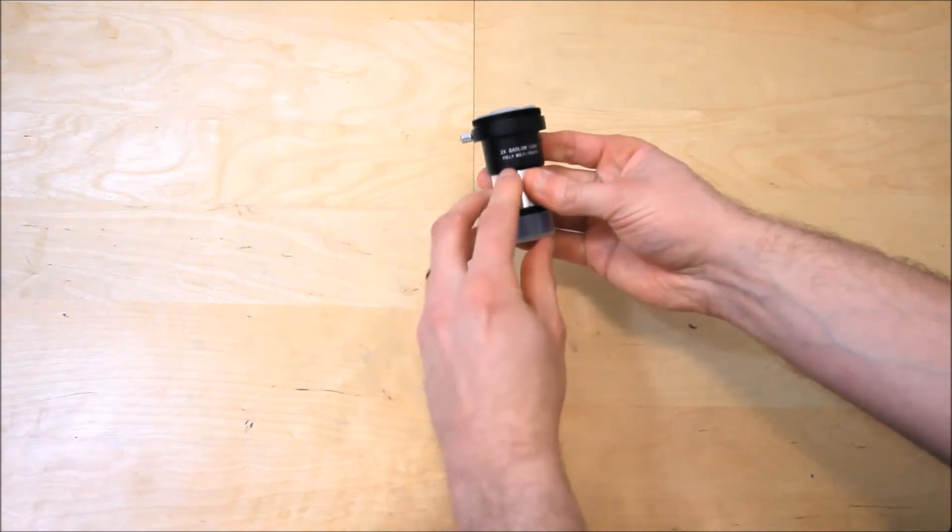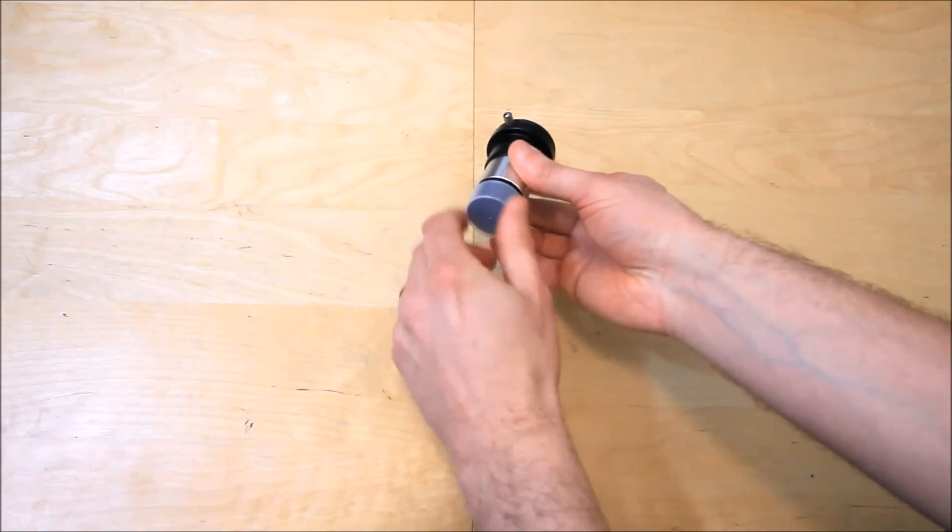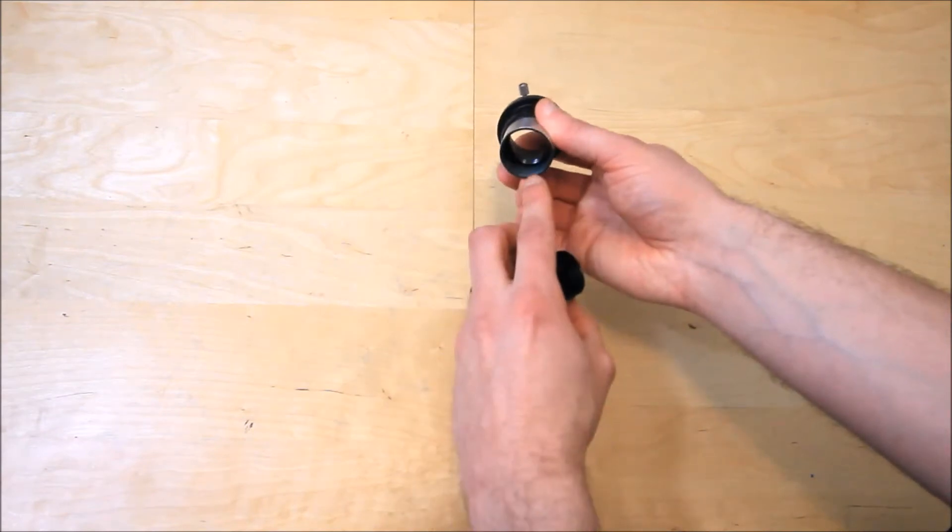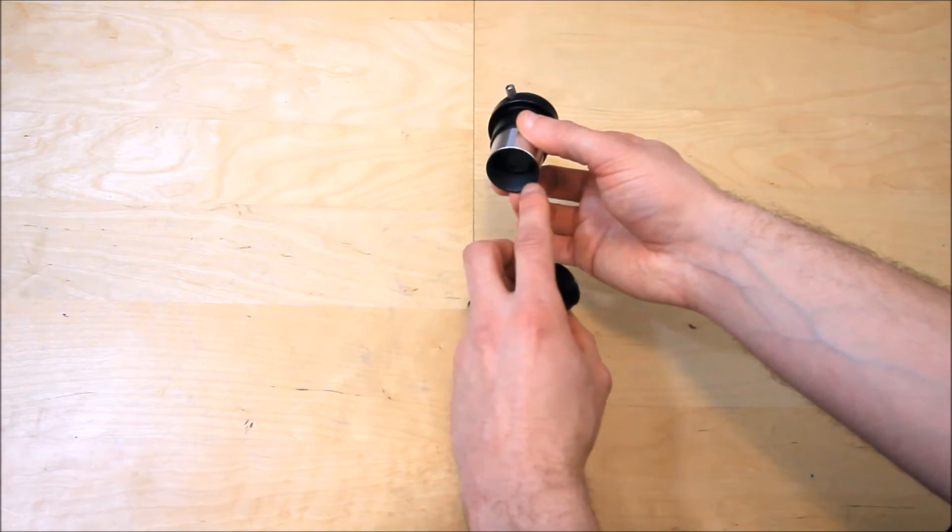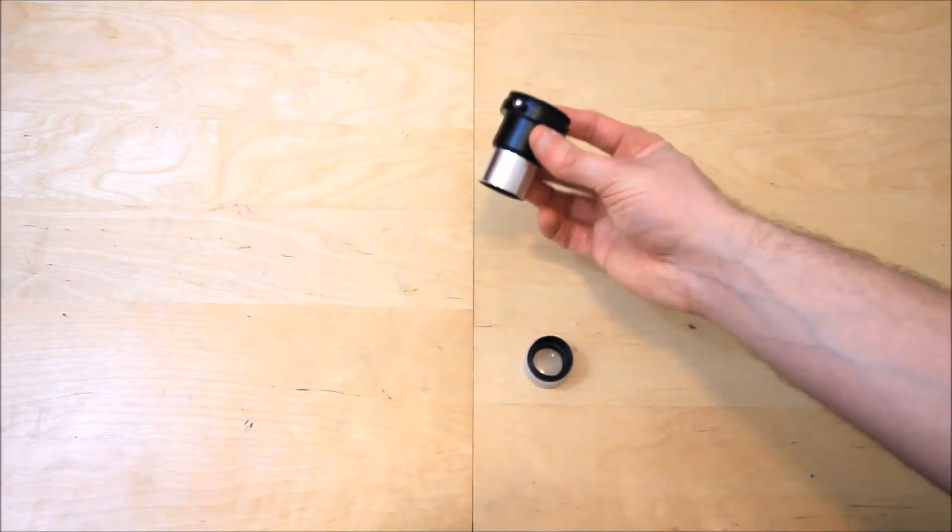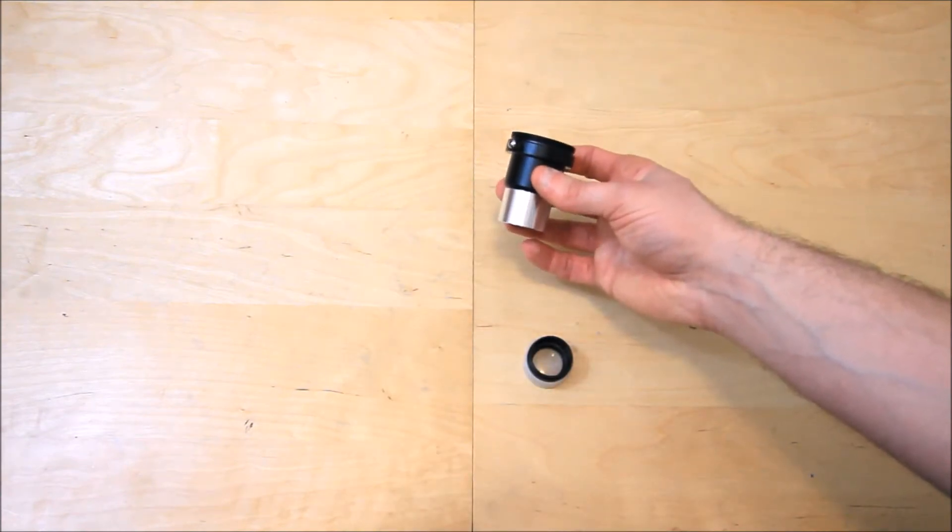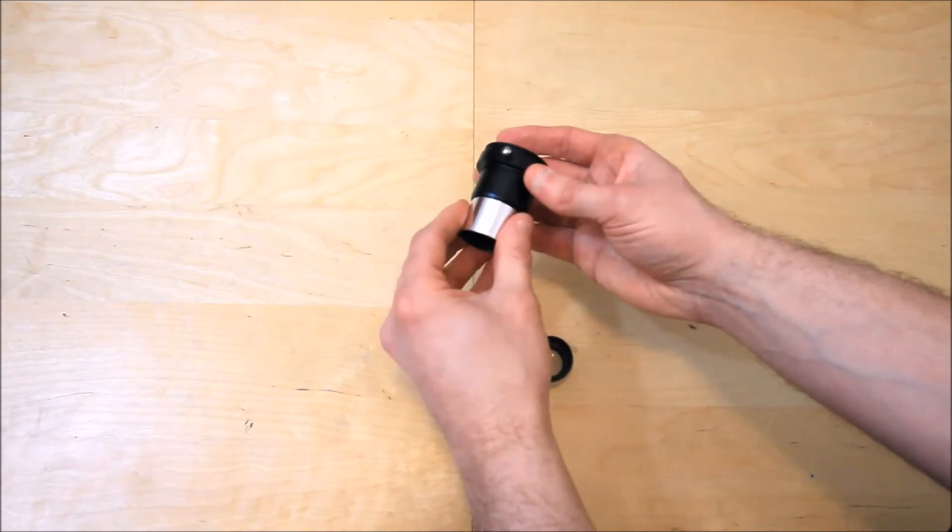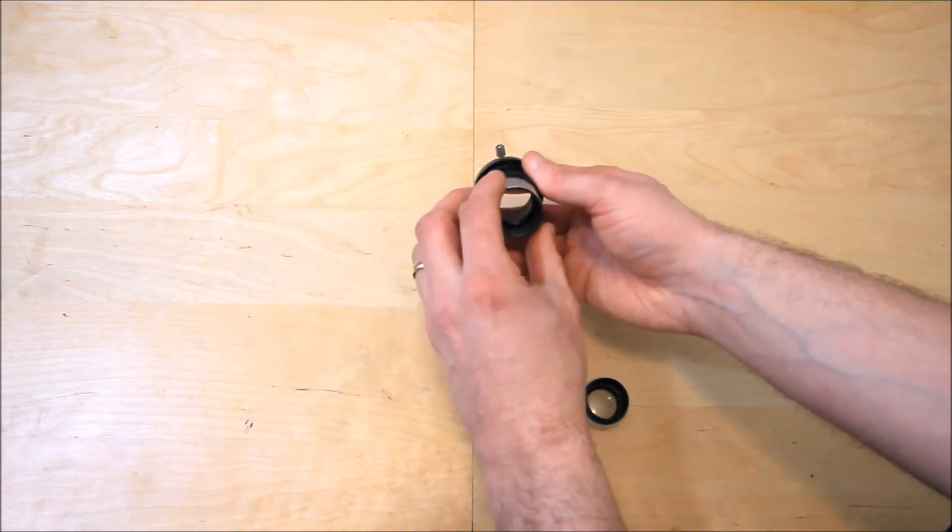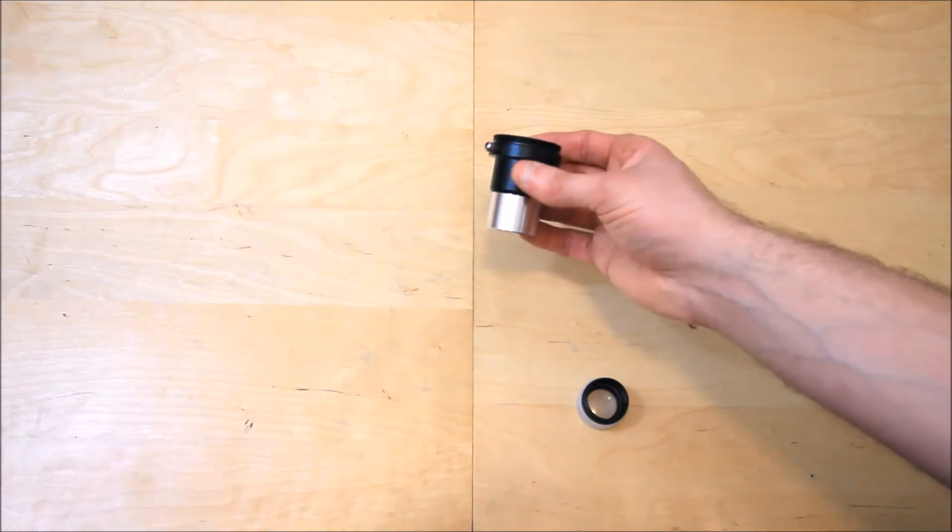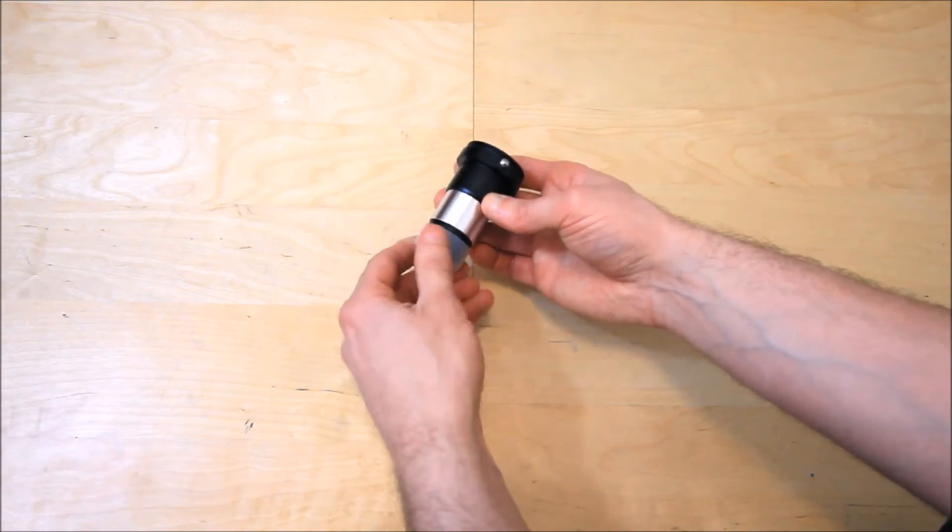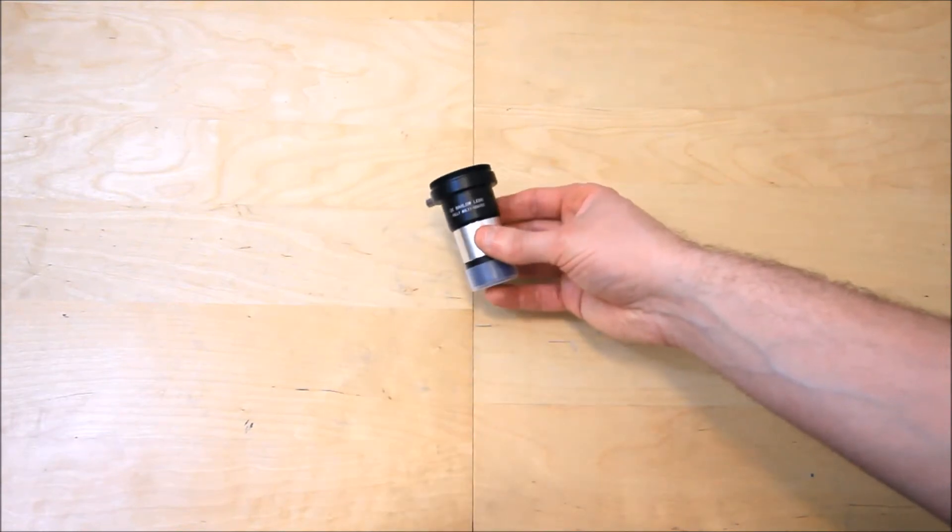It has full metal construction, which is always good to see. It has a removable lens element with darkened threads to eliminate internal reflections and stray light. You can screw on inch and a quarter filters on there. This alone will act like an extension tube so you can attach your camera without the two times Barlow and give you a magnification effect. So this will in theory act as a DSLR camera adapter. There's two different applications there already.